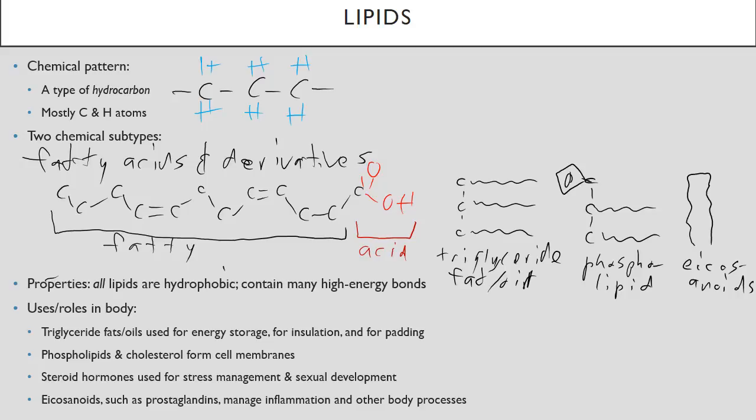Some quick uses and roles in the body. Triglyceride fats or oils are used for energy storage, insulation, and for padding. Phospholipids and cholesterol are used to form cell membranes. Steroid hormones are used for stress management and sexual development. And eicosanoids, such as the prostaglandins, are used as local signaling molecules that manage inflammation and other body processes.